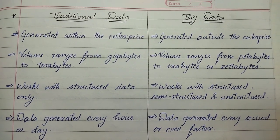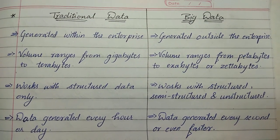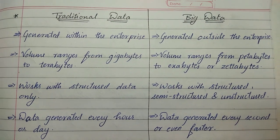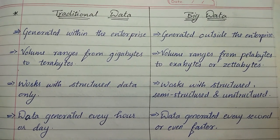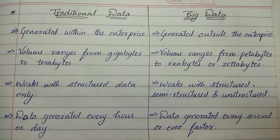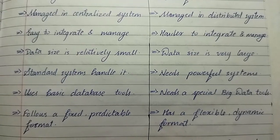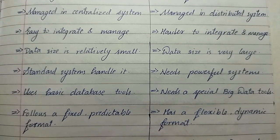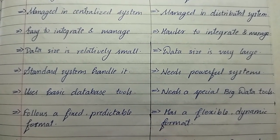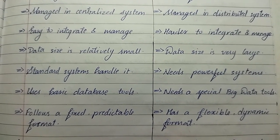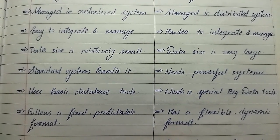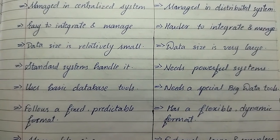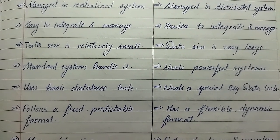In traditional data, the data is generated every hour or a day, while in big data, data is generated every second. In traditional data, the data is managed in a centralized system, and in big data, the data is managed in a distributed system.